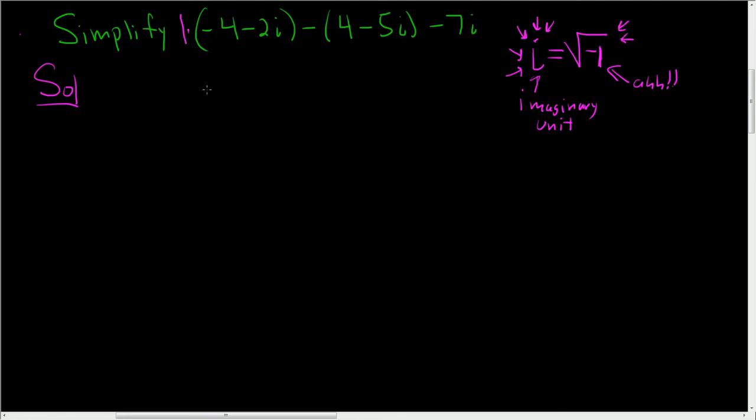So here we have a 1. And in this case, we can drop the parentheses because 1 times anything is that anything. So negative 4 minus 2i. No problems there.